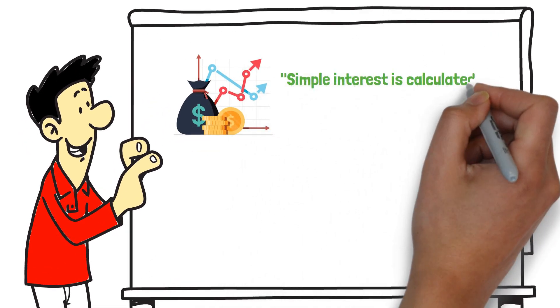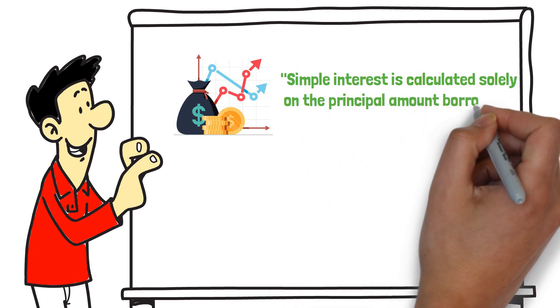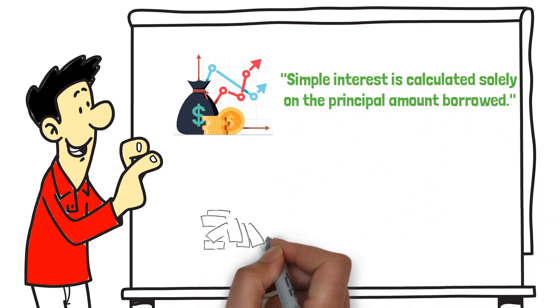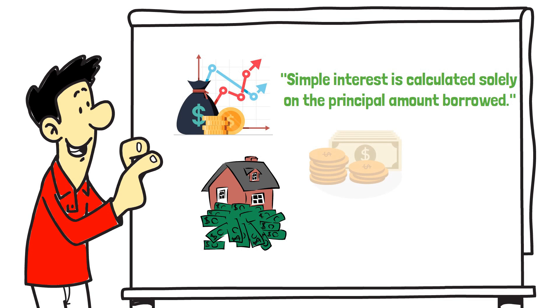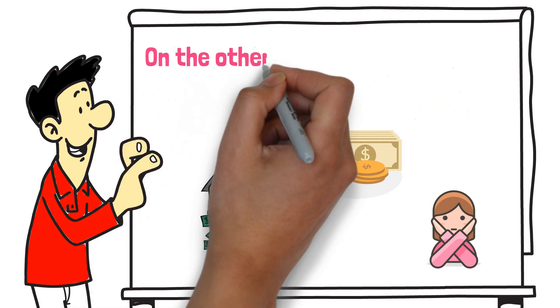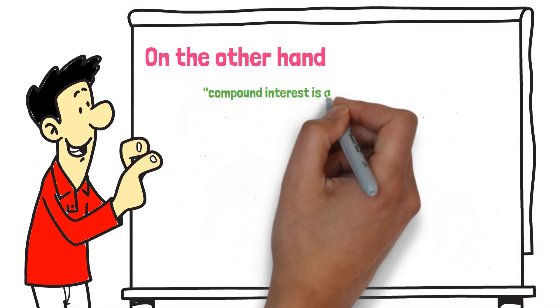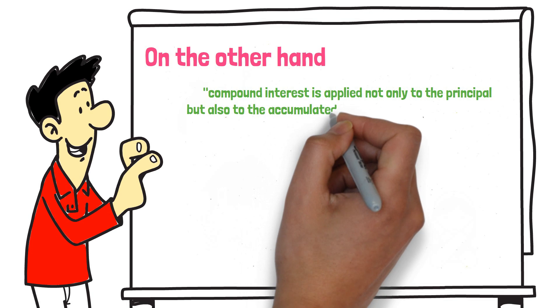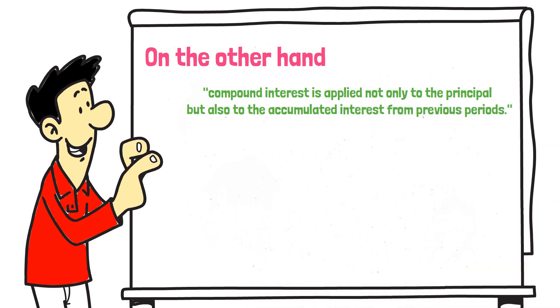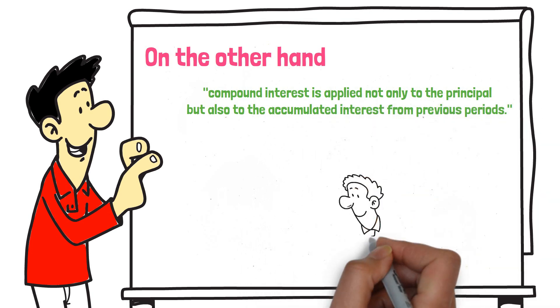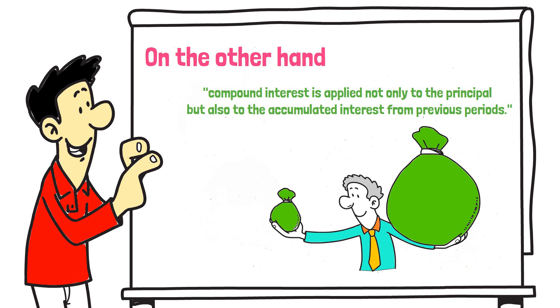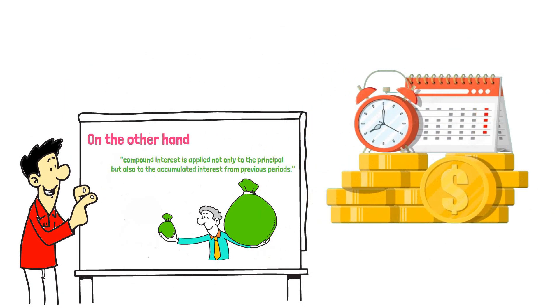There are different types of interest, primarily simple and compound interest. Simple interest is calculated solely on the principal amount borrowed. If you take out a mortgage or similar loan, the interest you pay is based only on the original amount borrowed without considering any interest that has already been added. On the other hand, compound interest is applied not only to the principal but also to the accumulated interest from previous periods.